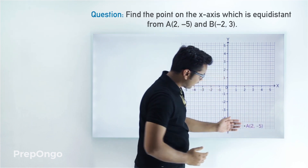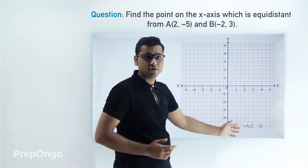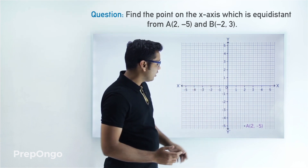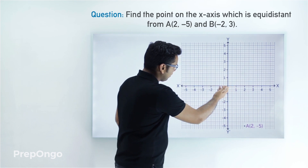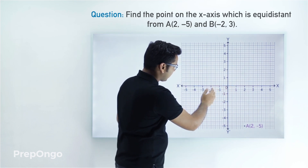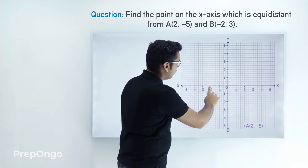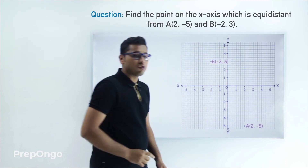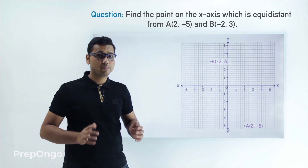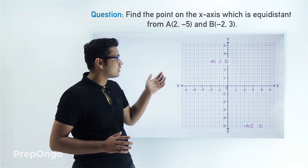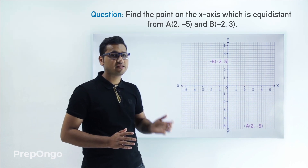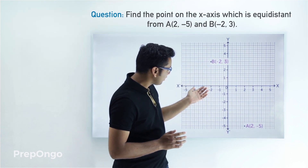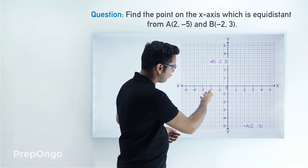So A is at (2, -5). Similarly we can plot B, which is (-2, 3) — we move two points on the negative x-axis and then move up three points to get (-2, 3). Now let's suppose that the point which is equidistant from these two points is P, and since it is on the x-axis...